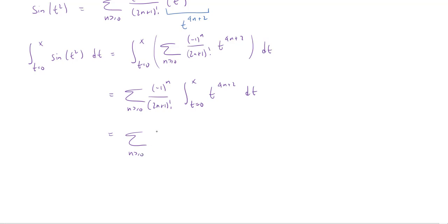So I'll copy in my series. So what's left in here? When I integrate t to the 4n plus 2, I'm going to get 1 over 4n plus 3 times t to the 4n plus 3. And then I want to evaluate this between 0 and x.